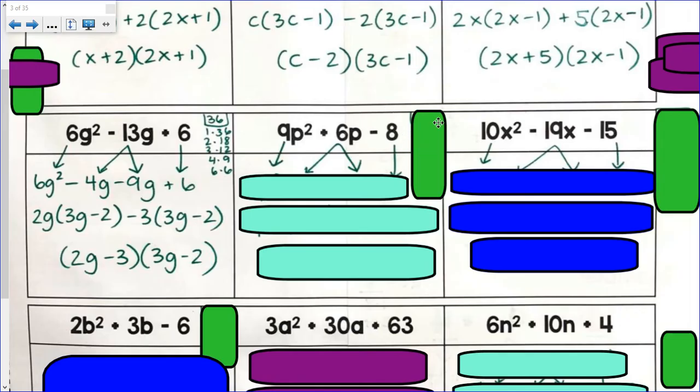9 times negative 8. Negative 72. My factor pairs of negative 72. 1 times 72. 2 times 36. 3 times 24. 4 times 18. 6 times 12. 8 times 9. To get a negative 72, one of them will have to be negative. And they have to then add up to get positive 6.